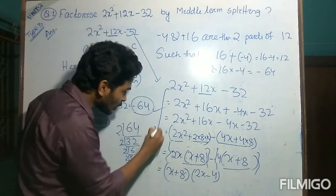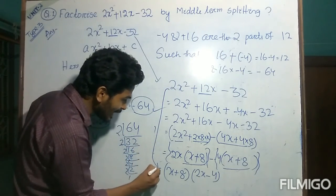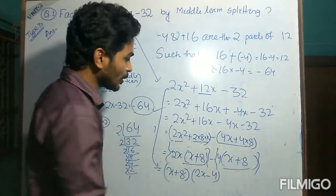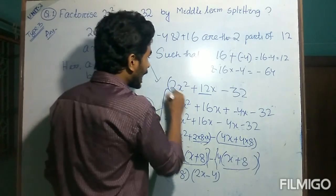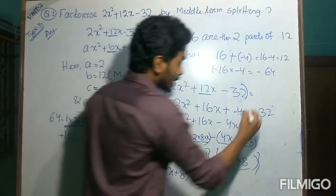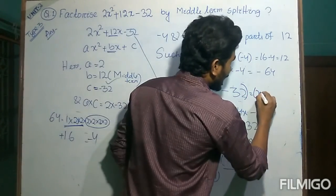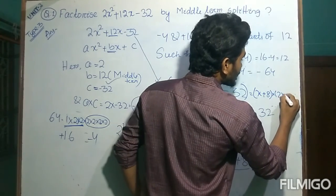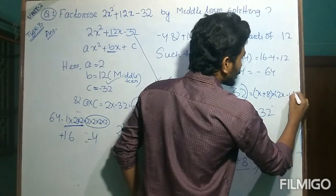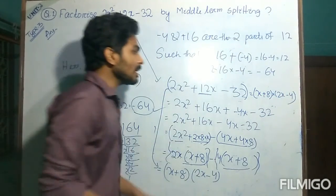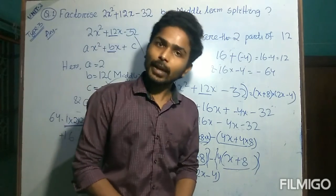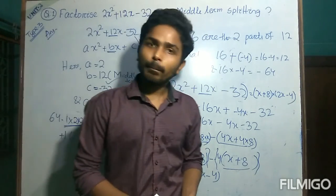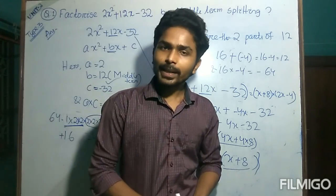Hence this quadratic polynomial can be expressed as the product of two linear polynomials: x plus 8 into 2x minus 4. The quadratic polynomial 2x squared plus 12x minus 32 has now been factorized using the middle term splitting method.